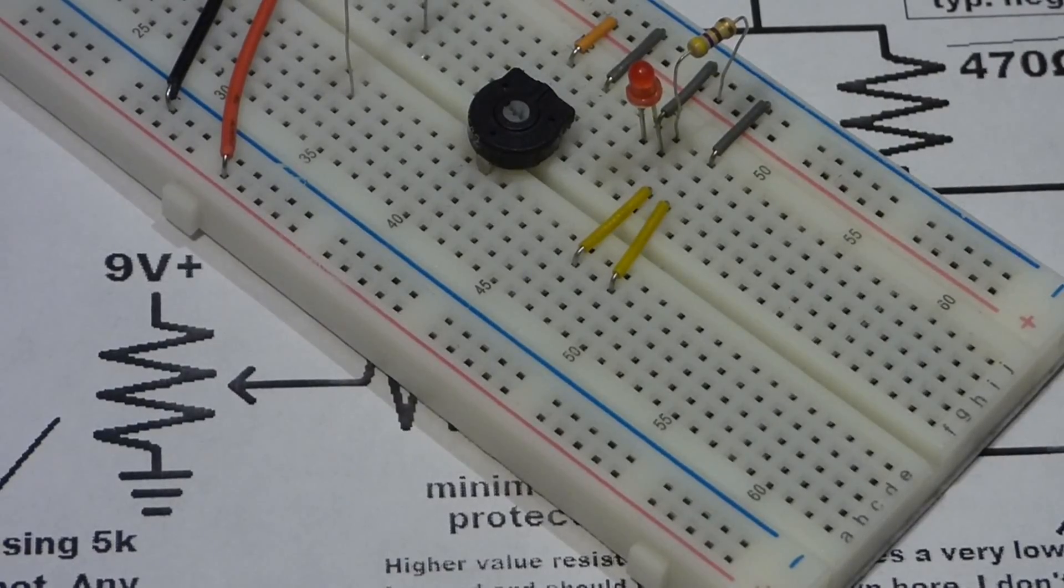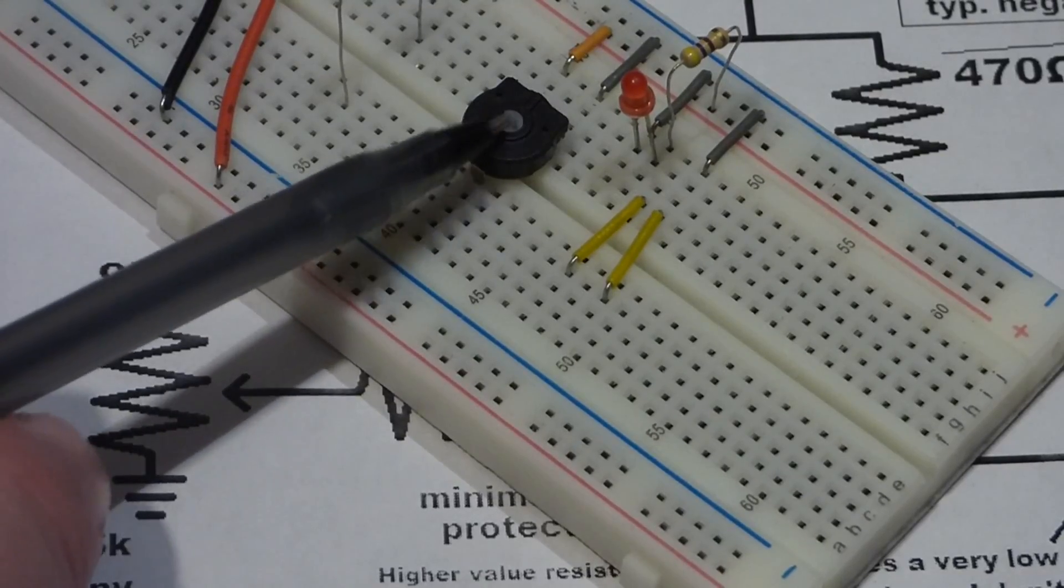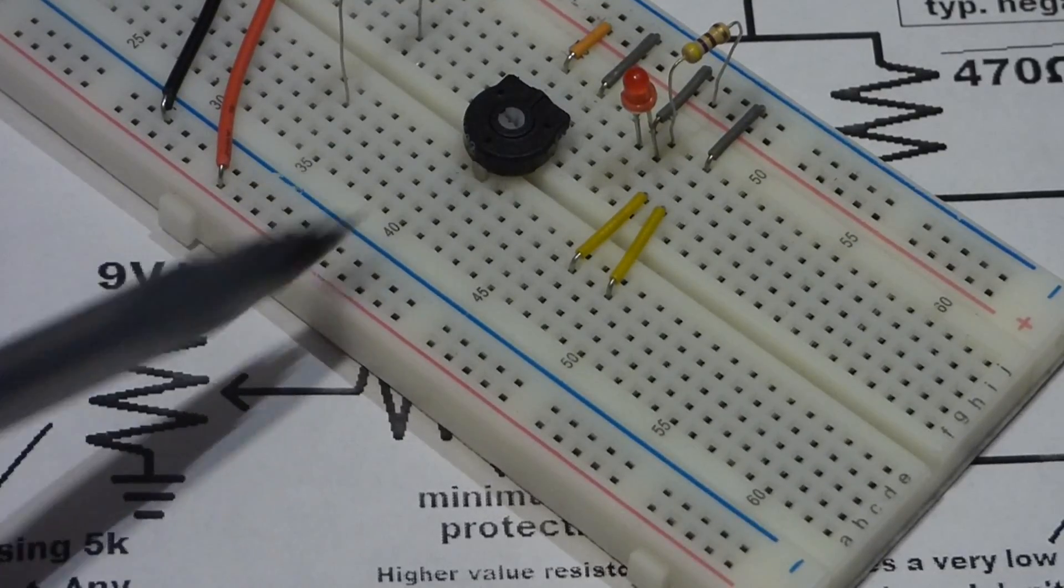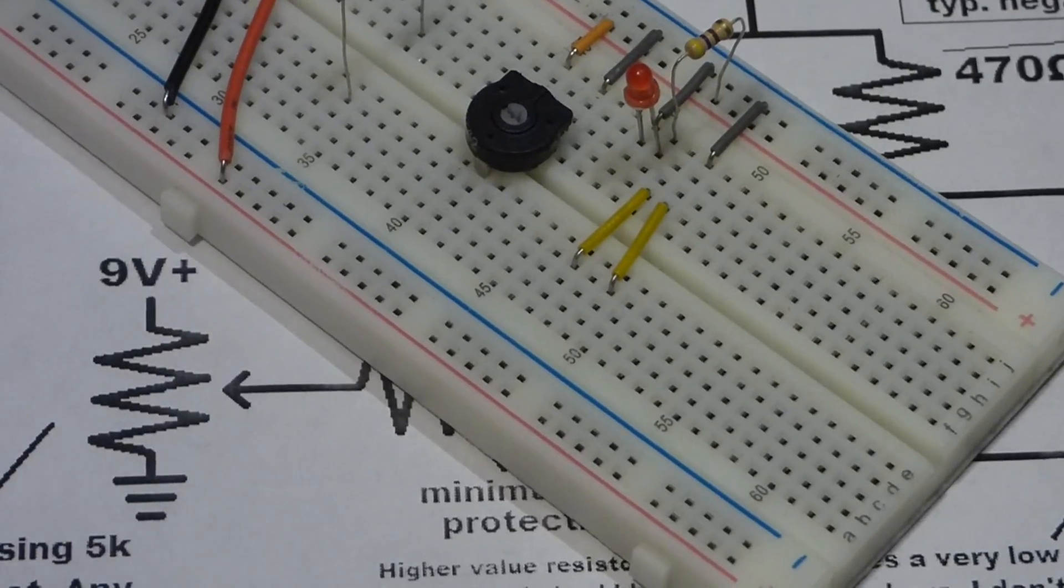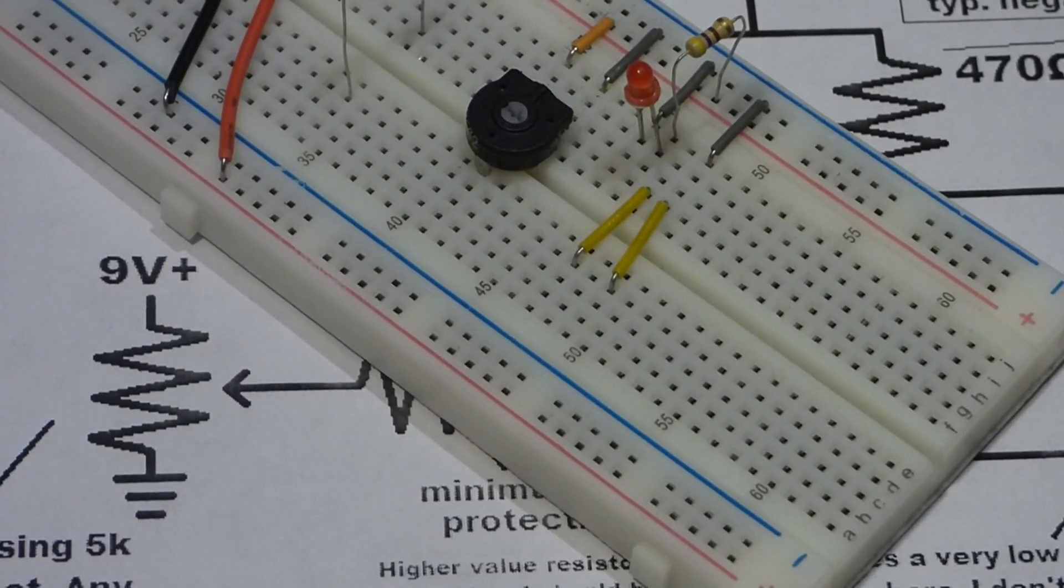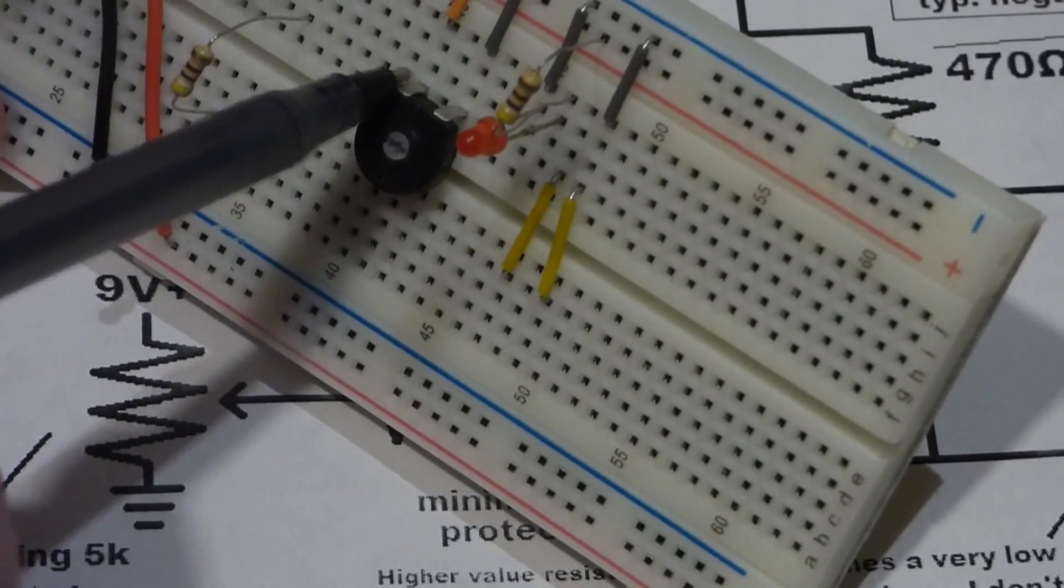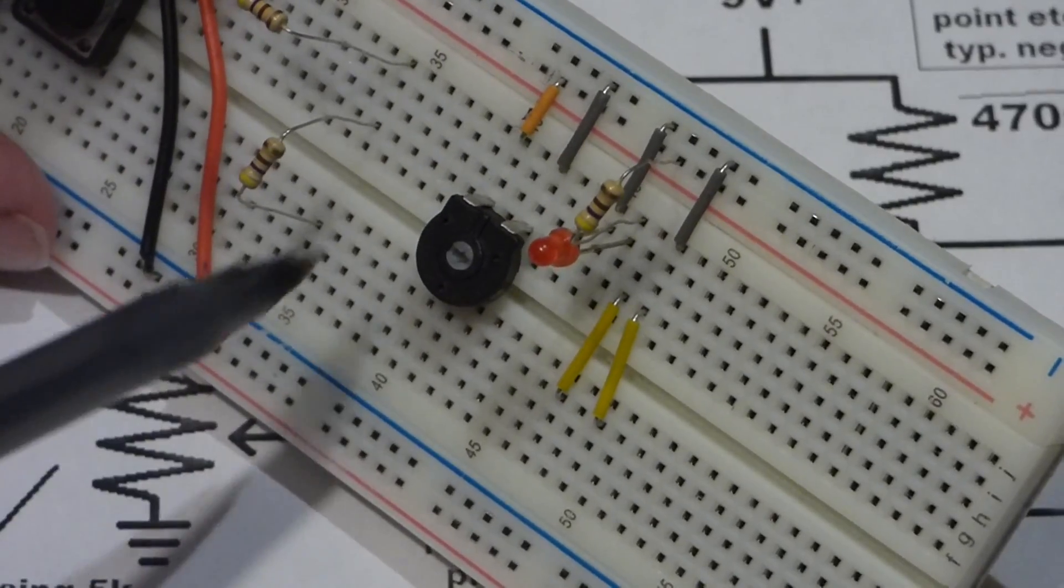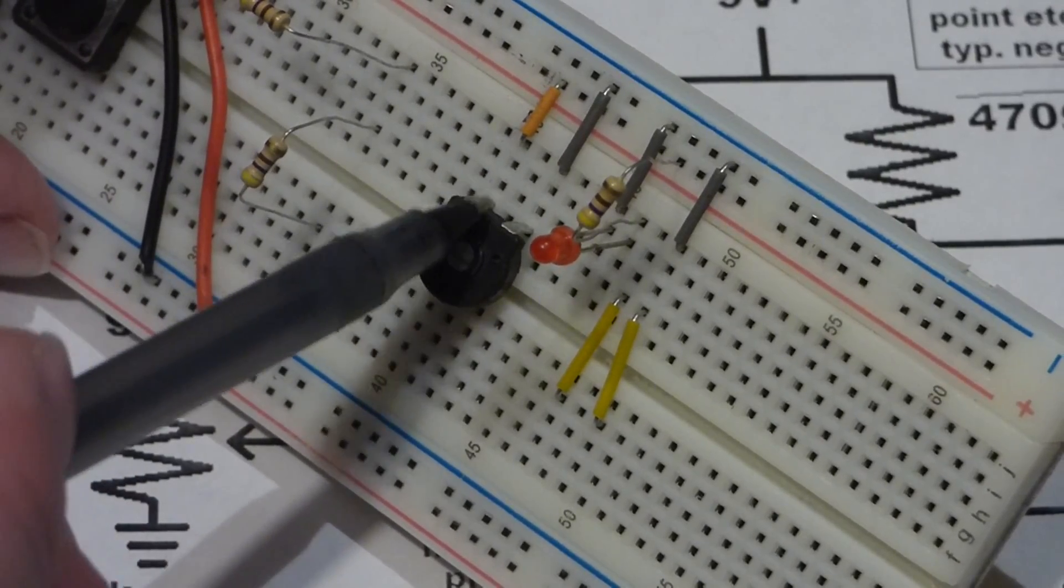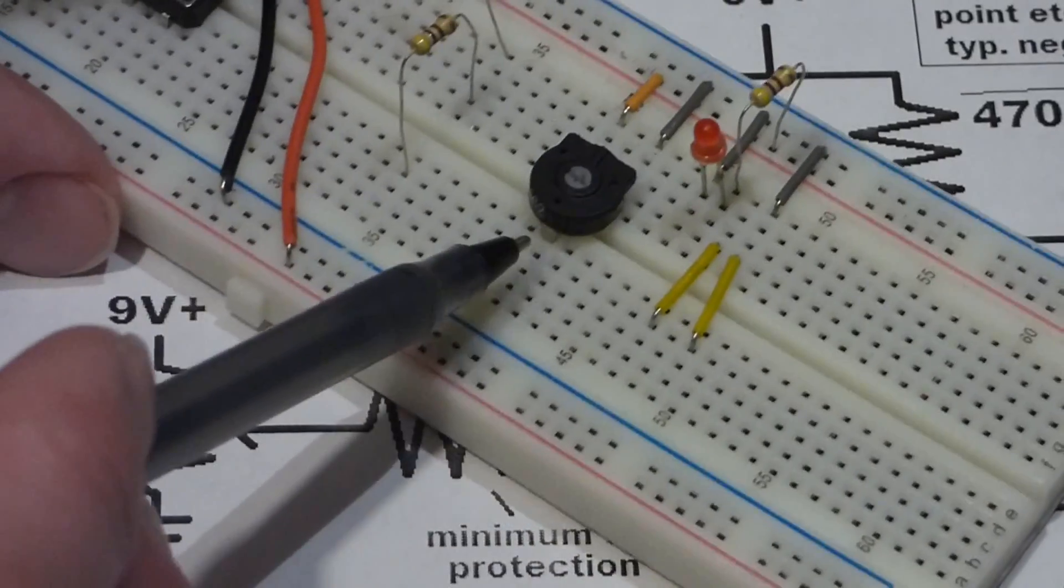Now we're going to jump to the opposite end of the circuit to the input. For our input, how we're going to adjust voltage coming in, we're going to use a trim pot. A trim pot is a great way to set a voltage in a circuit. We connect two ends of the trim pot directly to the battery.